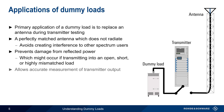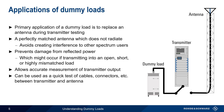Another application of dummy loads is enabling very accurate measurements of the transmitter output power. When placed at the antenna feed point, a dummy load can also be used to make a quick test of cables, connectors, etc., between the transmitter and the antenna. Since the dummy load is a perfect antenna, a high VSWR during transmission can indicate problems in the conducted signal path between the transmitter and the antenna feed point.